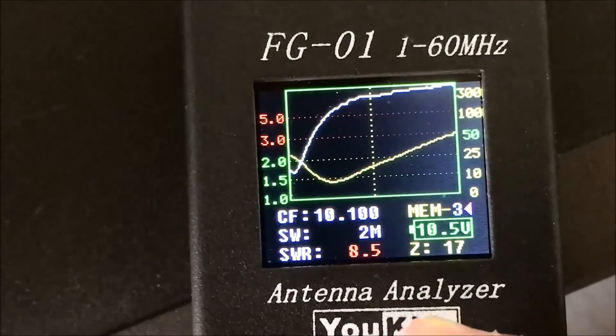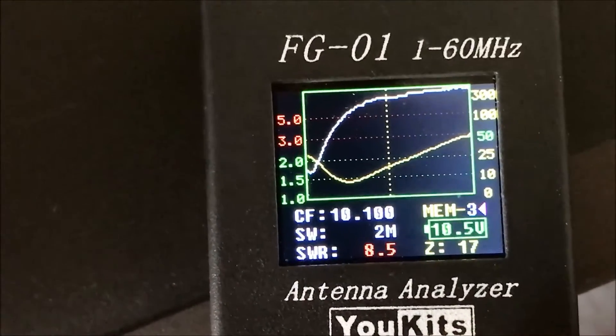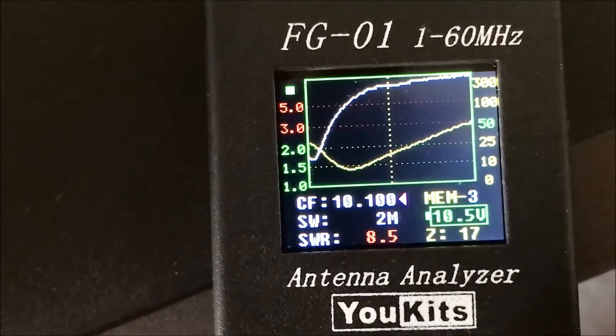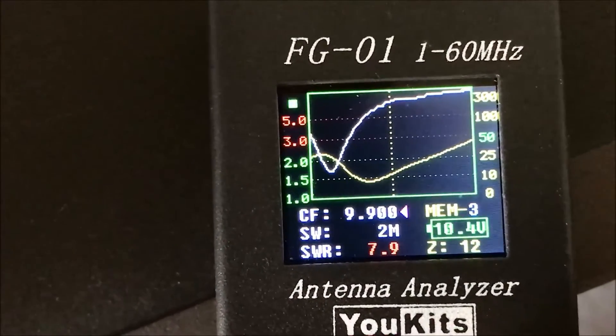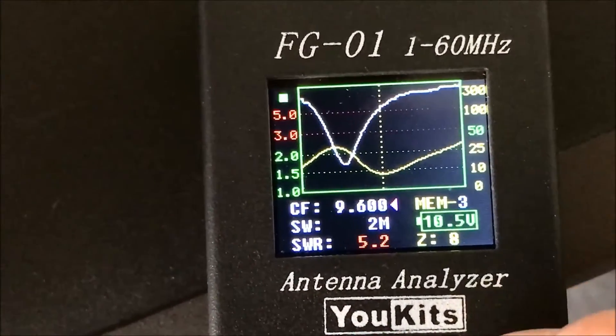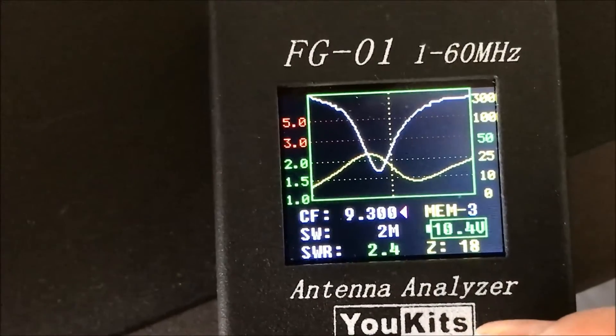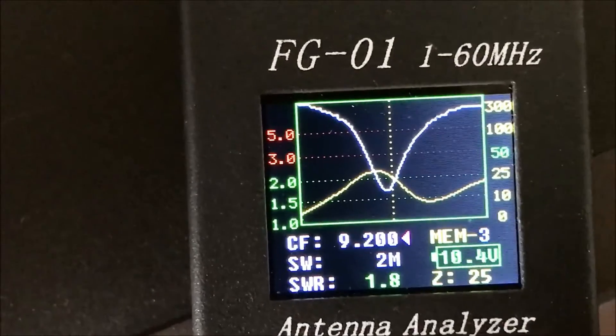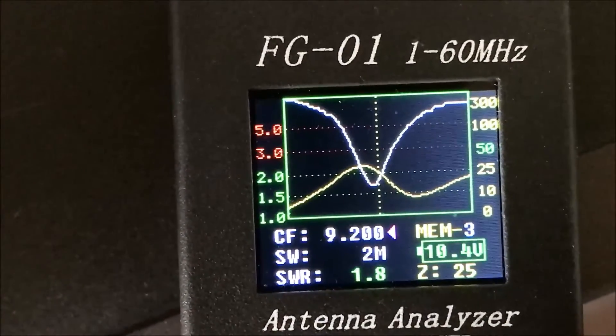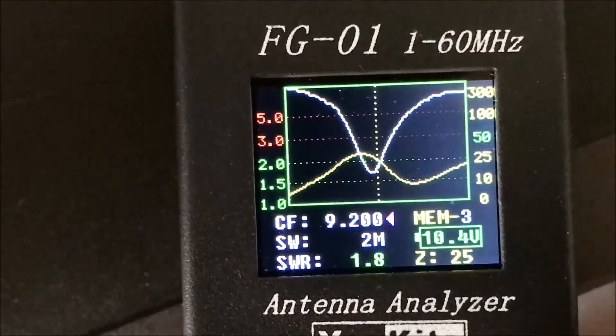I've already got an antenna up for 40 and 30, but let's see what's going on here. Look at that, 9.2 megs. There's not much there.